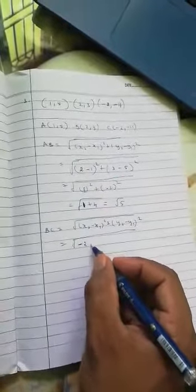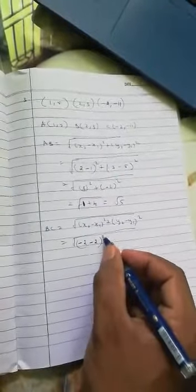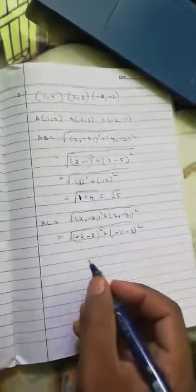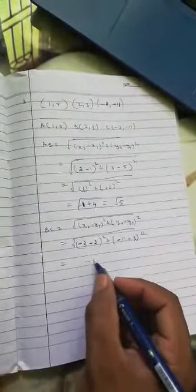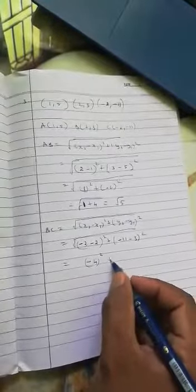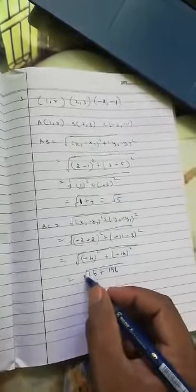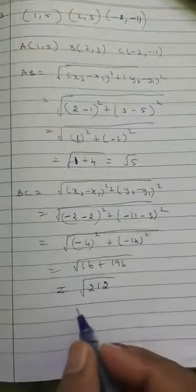So x2 minus x1 whole square plus y2 minus y1 whole square, so minus 4 squared and minus 14 squared. 4 squared is 16 and 14 squared is 196, so add these two, that's 212. Then if you make it, this is 212 means 2 times 106, 2 times 53.